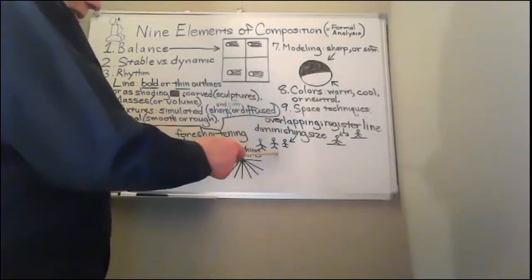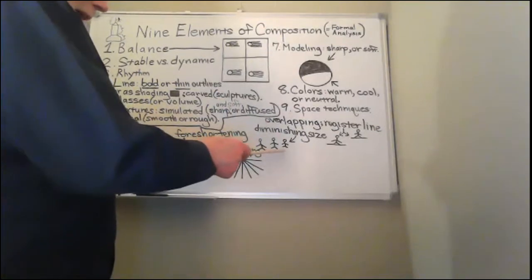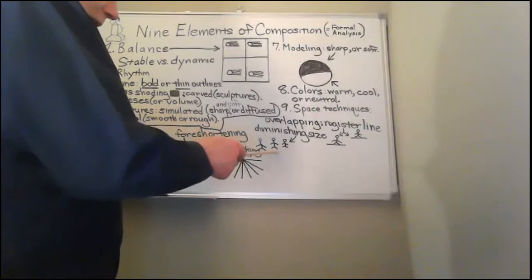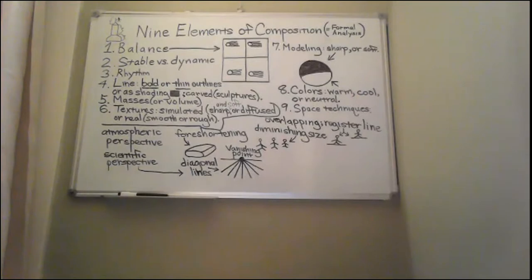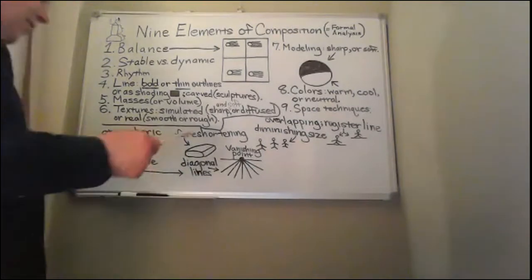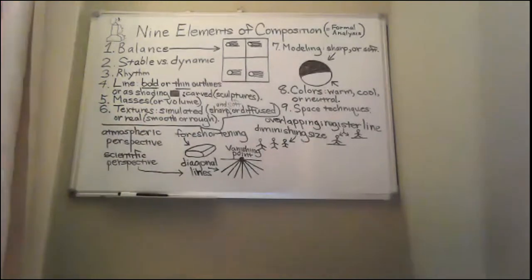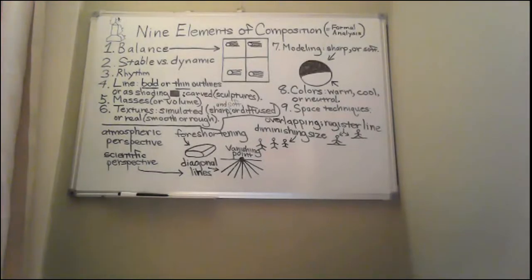Diminishing size is when you show objects that appear to be further away because the smaller they are — diminishing in size — that's supposed to create the illusion of them being further away. So when you show a group of objects, the smallest ones are meant to look further away from the viewer, and the larger ones are supposed to be closest to the viewer. Any questions so far? Now we get to the more complex ones — foreshortening. Foreshortening is a technique for depicting depth or space in a work of art in which that part of an object...